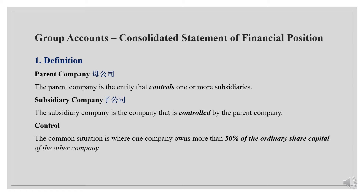子公司是被母公司所控制的公司. What is control? 什么是控制呢? The common situation is where one company owns more than 50% of the ordinary share capital of the other company. 一个公司如果拥有了另一家公司50%以上的股份，就能够对该公司实行实际控制.